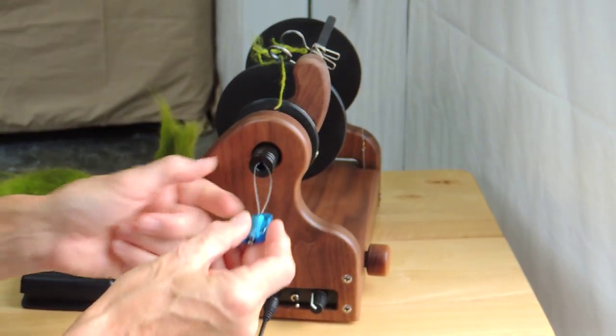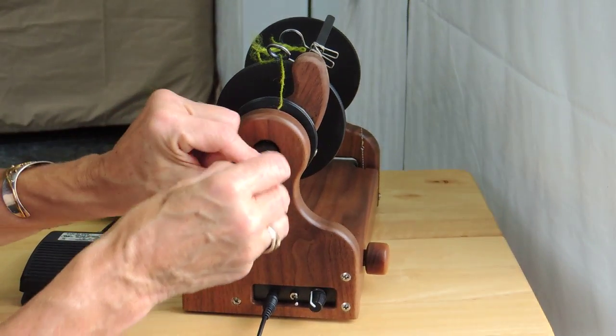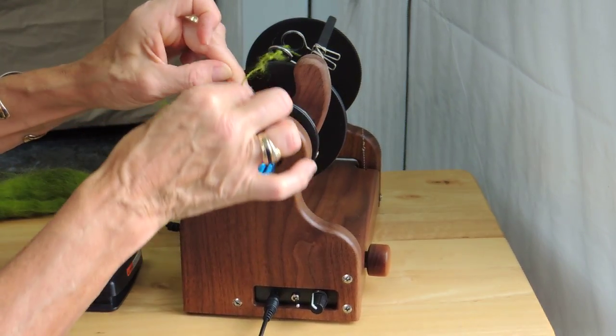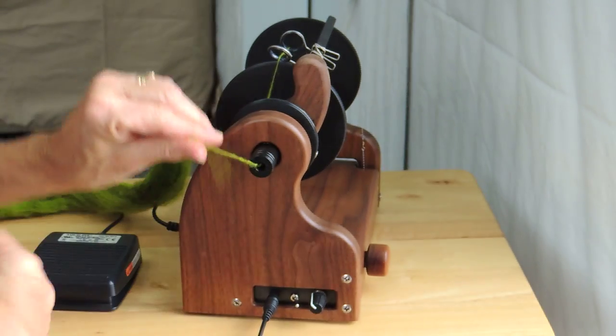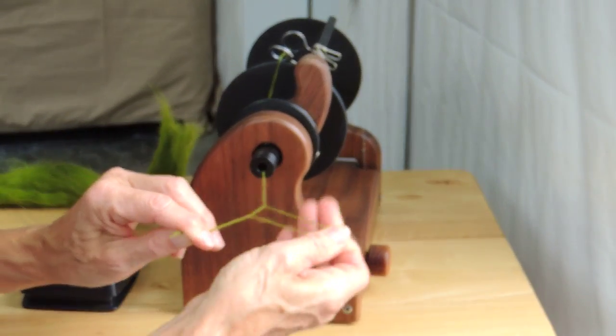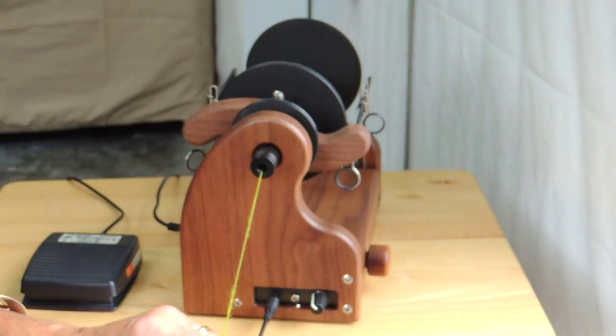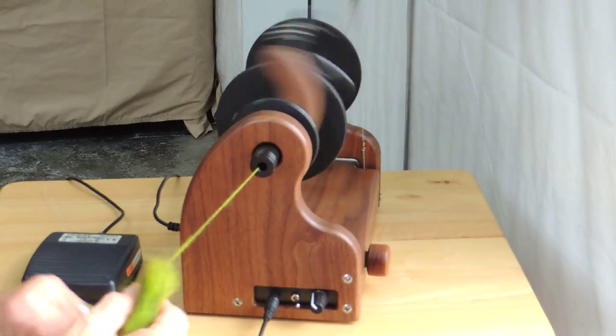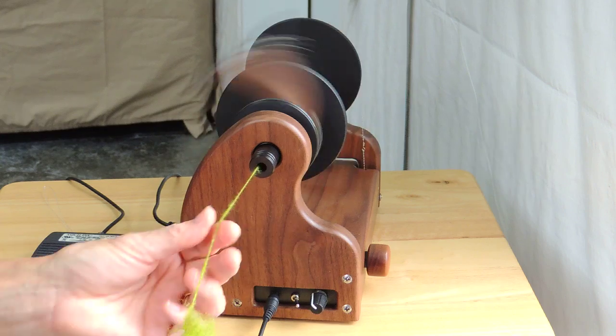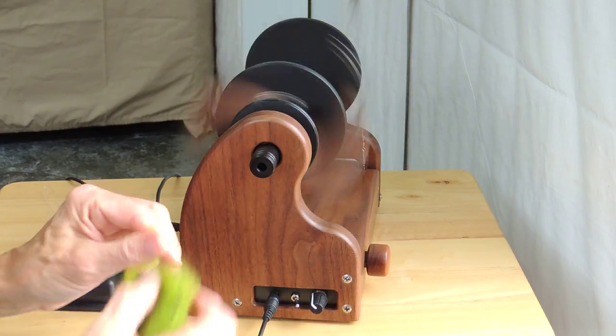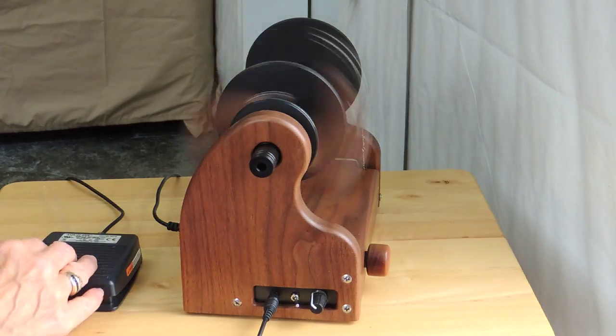Run the orifice threader which you will get with your spinner in, pick up your thread, bring it back out and now you'll see that your thread is held nice and smoothly and doesn't bounce around as much.